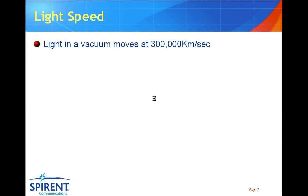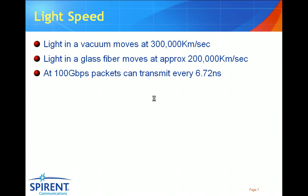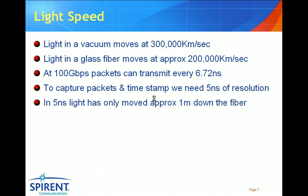To put these high speeds into perspective, let's take a look at a few facts. Light in a vacuum moves at 300,000 kilometers per second. Light in a glass fiber, due to the refractive index of the glass, moves a little bit slower at about 200,000 kilometers per second. At 100 gigabits, packets can travel every 6.72 nanoseconds. To capture packets and timestamp them, we need 5 nanoseconds of resolution — the clock must run at a greater rate than the packet transmit rate to ensure we capture every packet correctly. In 5 nanoseconds, light has only moved approximately one meter down the fiber, requiring very tight resolution within the test equipment.